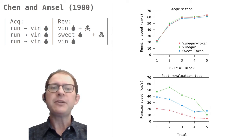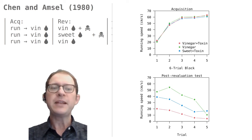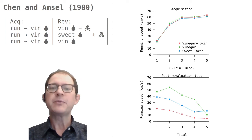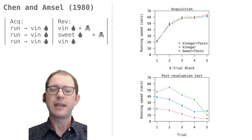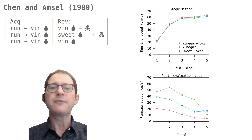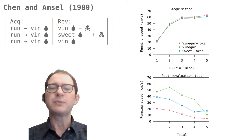Comparison with the vinegar-only group tells us that just drinking more vinegar water does not decrease running speed much. Comparison with the sweet water group tells us that just getting sick from drinking something is not enough — it must be the specific flavor they had previously found in the alley. Importantly, the slowdown was seen in the very first trial, which is different and more convincing than what happened in Rescorla's experiment, where the difference between treatment and control groups developed during the test rather than appearing on the first trial.